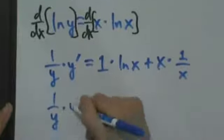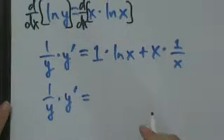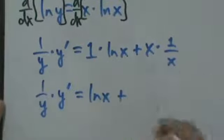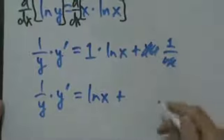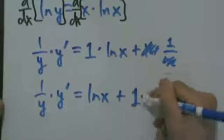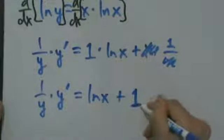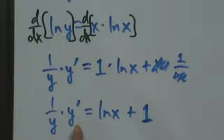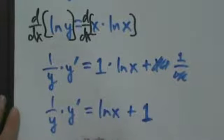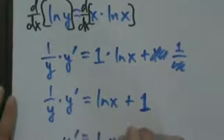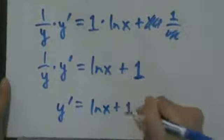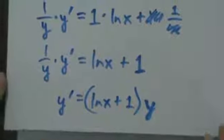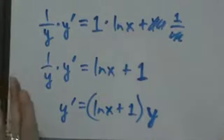The left side stays as it is for now. We have natural log of x plus 1 on the right. Now we're almost done — we want to find y prime. So we multiply both sides by y: y prime equals (natural log of x plus 1) times y. But we're not quite done yet.